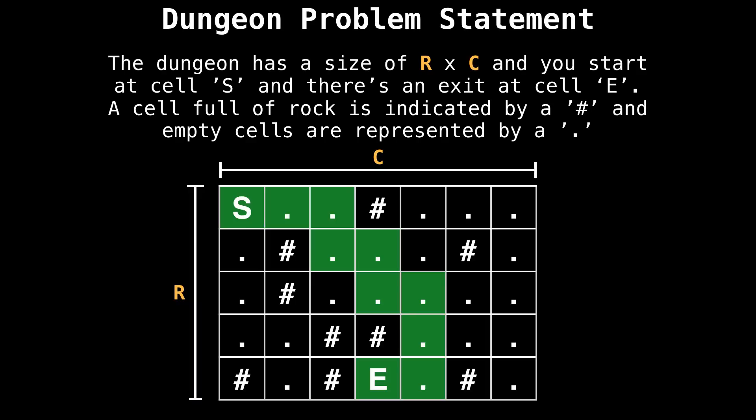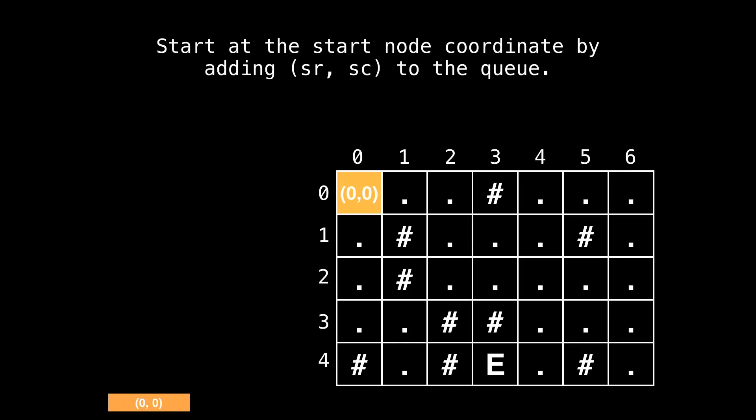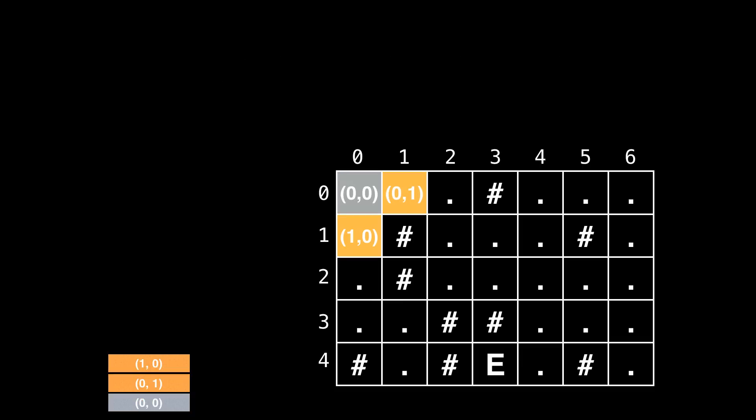So like in any breadth-first search, we need to start by visiting our start node and adding it to the queue. Assuming we've already found the coordinate of our starting node within the grid, we can add it to the queue. Then we visit the adjacent unvisited neighbors and add them to the queue as well, and continue this process all the while avoiding adding rock cells to the queue. So I'll let the animation play, and meanwhile, try and predict which cells will be visited next.